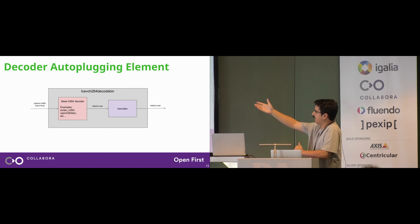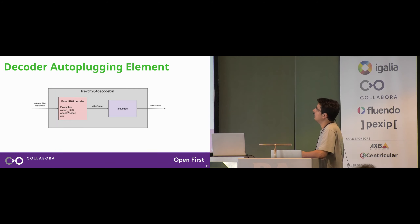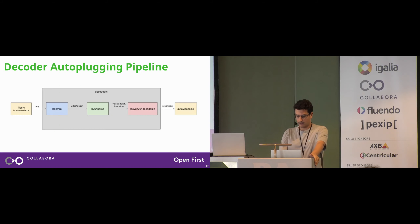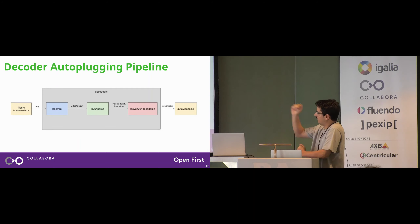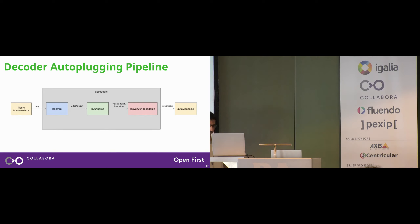Here's a picture of how these LC-EVC decode bin elements look. The first box is the base decoder — AVDEC H.264 or OpenH264 dec, whichever has the highest priority. The second element is the enhancer, the LC-EVC dec that enhances the picture. For example, with decode bin, a pipeline would be just a filesource and decode bin, which automatically finds the demuxer, parser, and — because the caps have lcevc=true and this element has higher priority — it selects the LC-EVC decode bin instead of a regular decoder like AVDEC H.264.